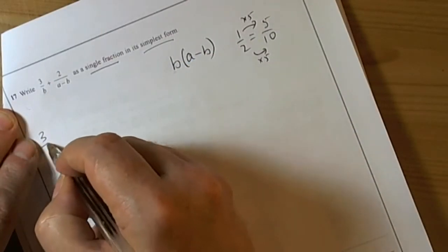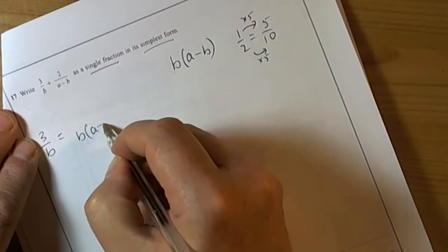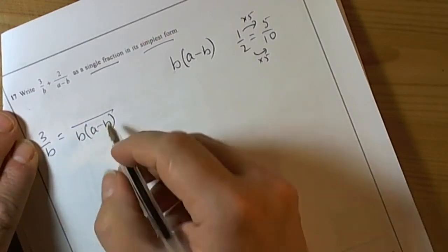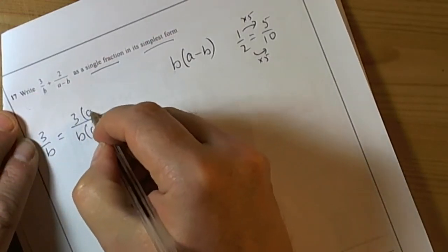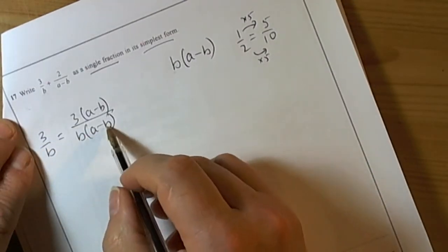When we look at 3 over b, we want to turn it into something with b(a-b). That means we must have multiplied by (a-b), so it's going to be 3(a-b) and that will be the equivalent fraction with the common denominator there.